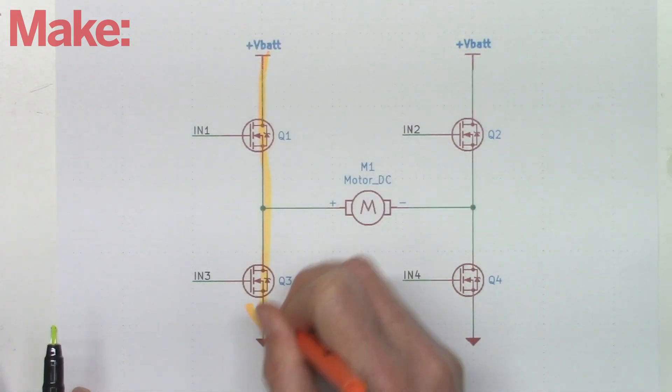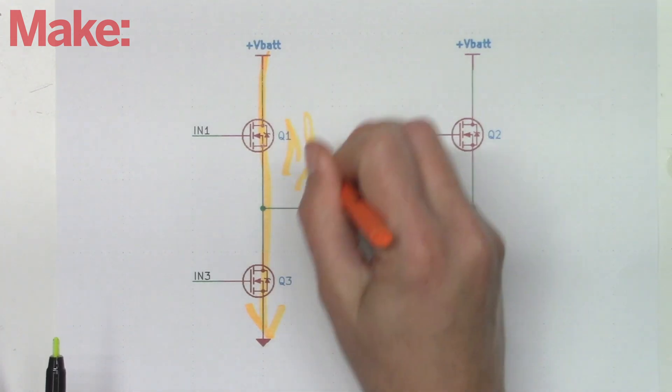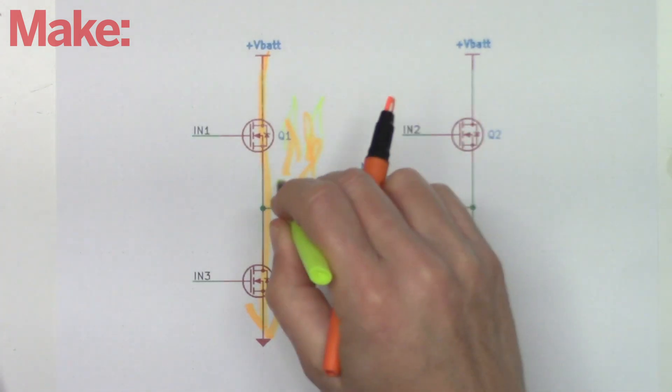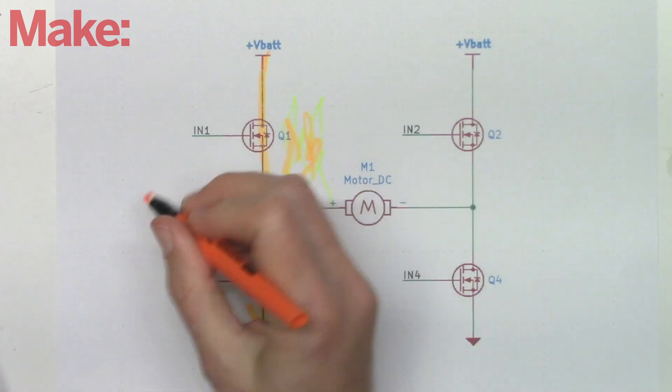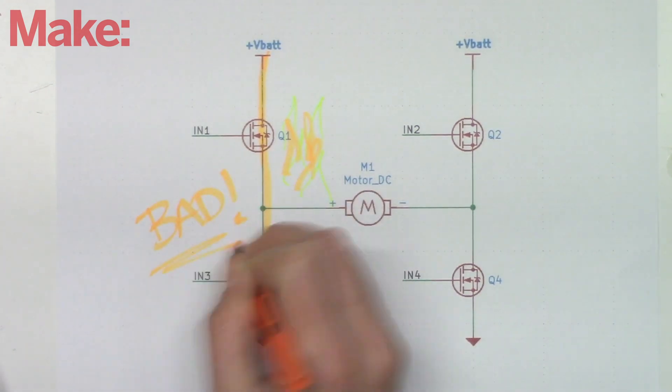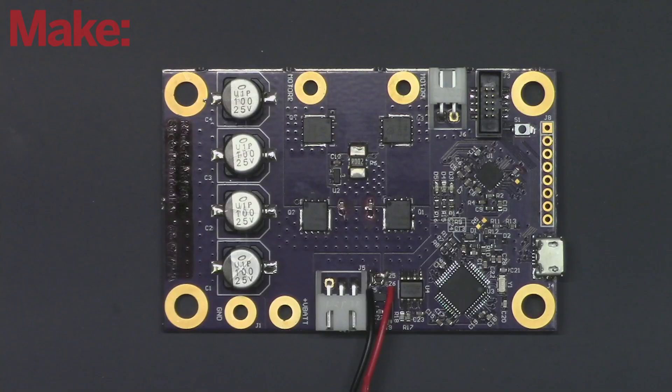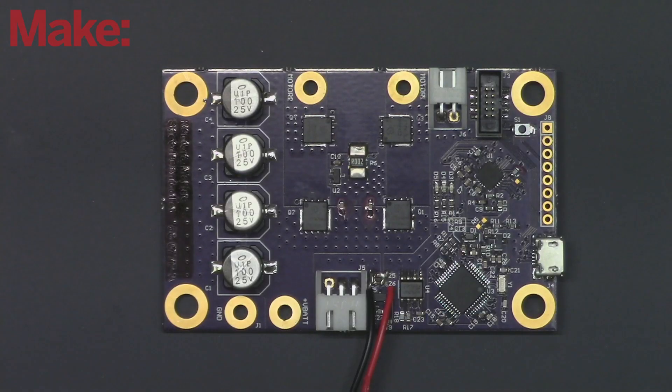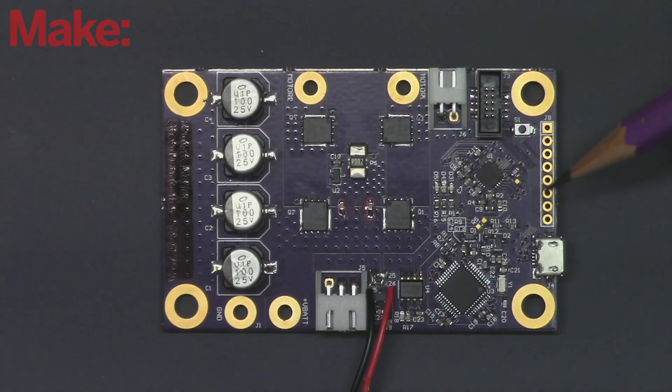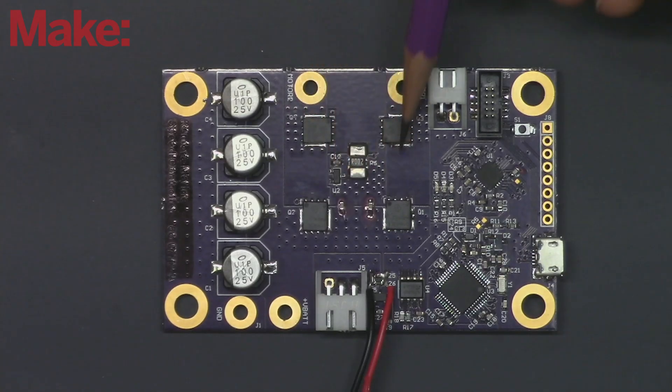One more thing, you don't ever want both transistors on one side of the H-bridge to be on at the same time, otherwise you'll short out your power supply and probably let the magic smoke out of your transistors. For this reason, and a few others, it can be nice to use a dedicated H-bridge controller chip between your processor and your transistors, which handles all the transistor gate timing and voltages for you.